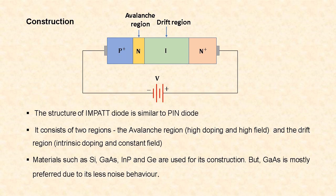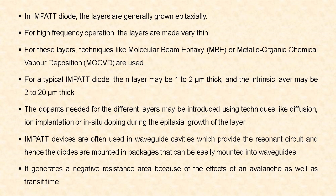In the avalanche region, avalanche multiplication occurs, and in the drift region the generated holes drift towards the contact. Materials used for the construction of the IMPATT diode are silicon, germanium, gallium arsenide, and indium phosphide, but gallium arsenide is mostly preferred because of its low noise behavior. The layers of the IMPATT diode are grown epitaxially for high frequency operation, and these layers are made very thin.